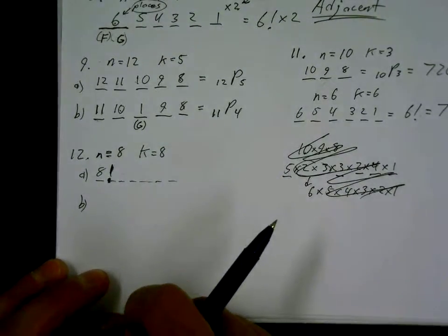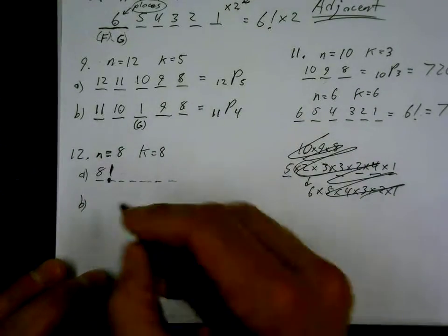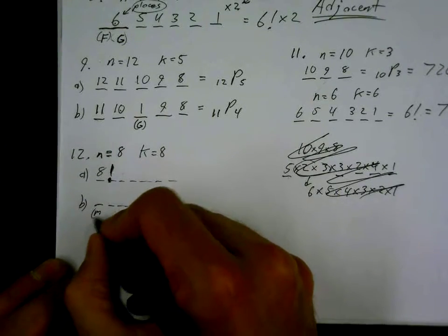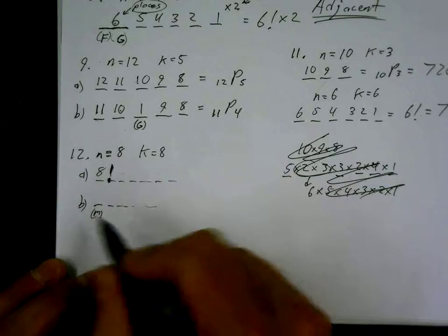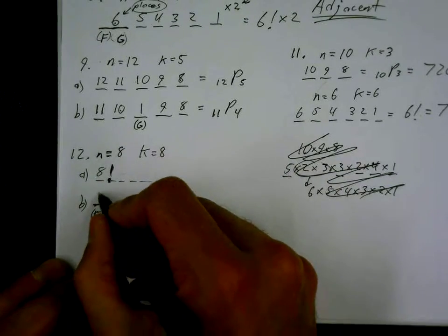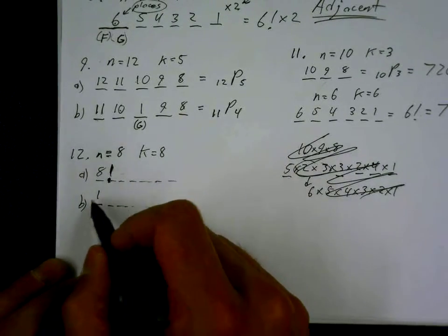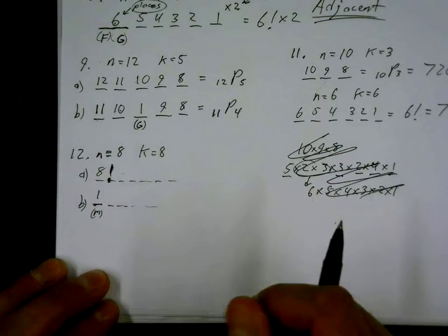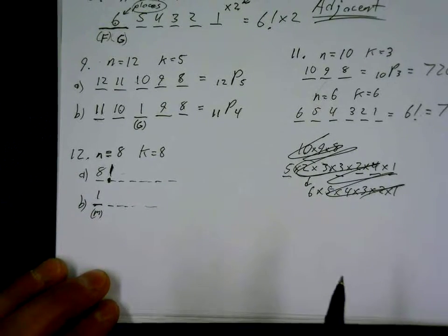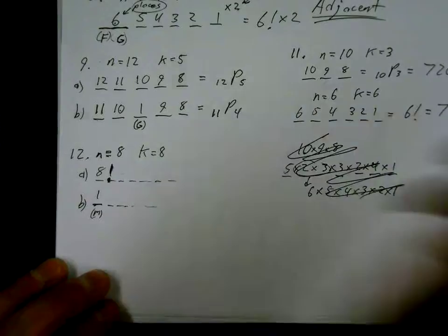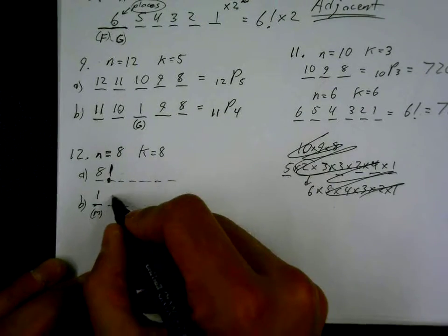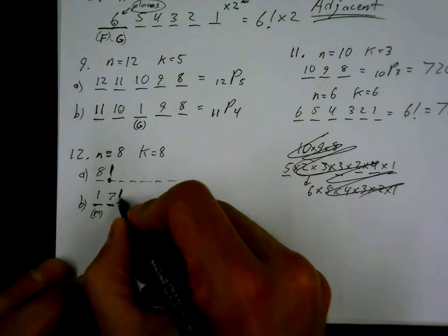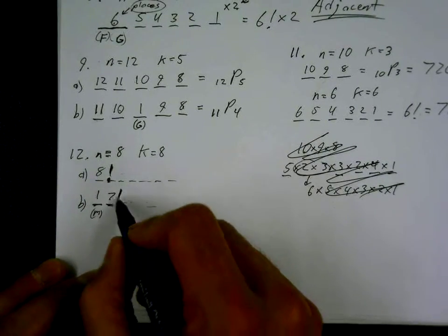Part b: the first letter must be an M. There is only one M in MATCHING, so that's 1 in the first seat. Going back to the bag, there are now seven letters remaining: 7, 6, 5, 4, 3, 2, 1. So the answer is 1 × 7! = 7!.